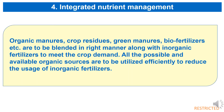The fourth measure for improving fertilizer use efficiency is integrated nutrient management. Organic manures, crop residues, green manures, biofertilizers, etc. are used and blended in the right manner along with inorganic fertilizers to meet crop demand. All possible and available organic sources are to be utilized efficiently to reduce the usage of inorganic fertilizers.